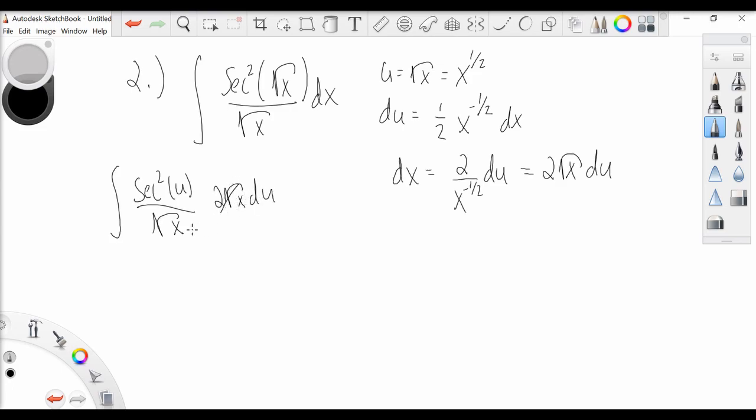And we're left with 2 times the integral of secant squared u du. We should remember from differential calculus that the derivative of tangent of x is equal to secant squared x.